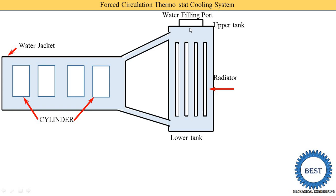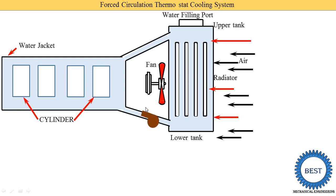On the upper side, a water filling point is provided. A fan is provided for air circulation through the radiator. A pump is provided — unlike the thermosiphon system where there is no pump and circulation is natural, here we use a pump, which is why it is called a force circulation system. There is also a thermostat, which is a device that regulates the flow of water.